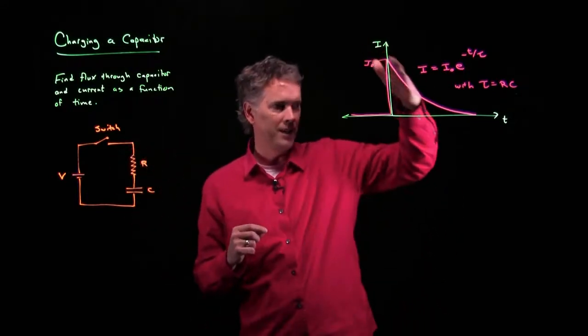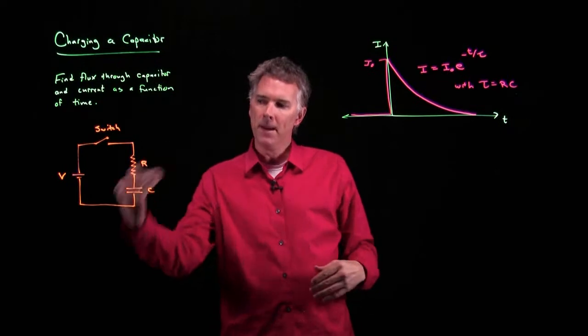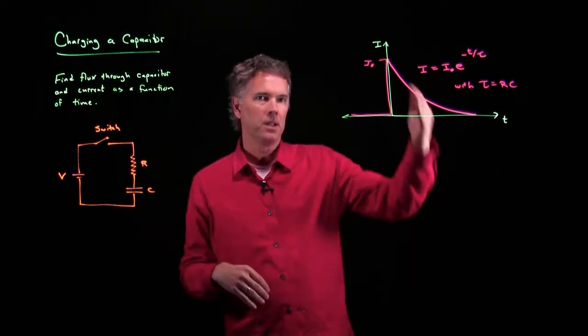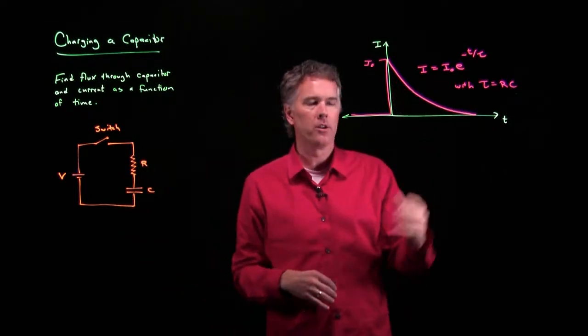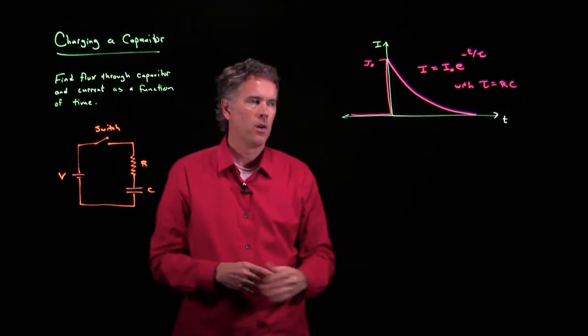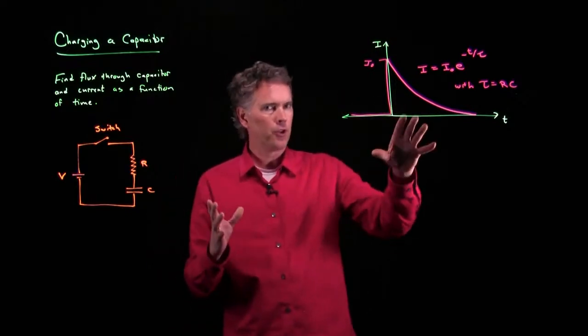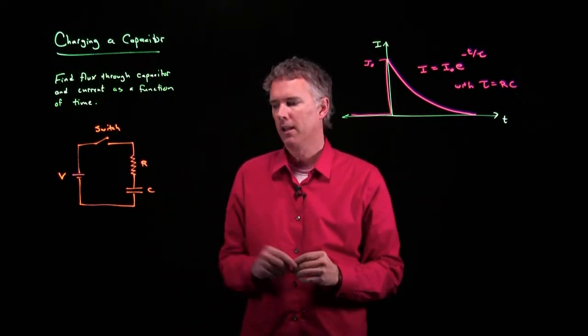Big R means that this thing decays slower. Big capacitor means it decays slower — it takes longer to charge up the capacitor. So this is what the curve for current looks like.